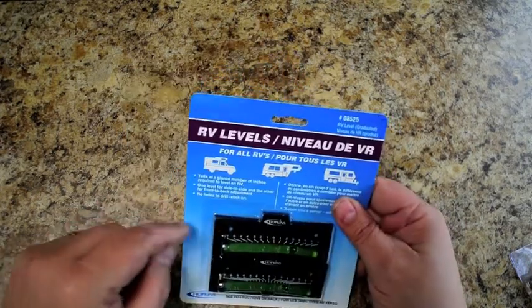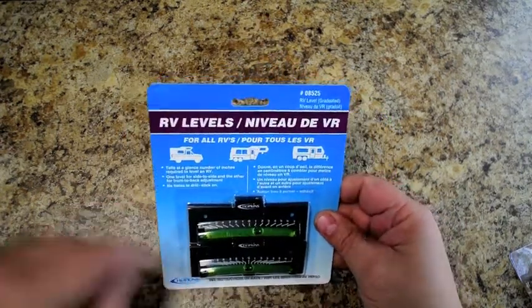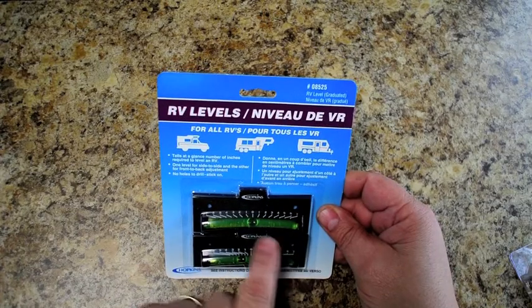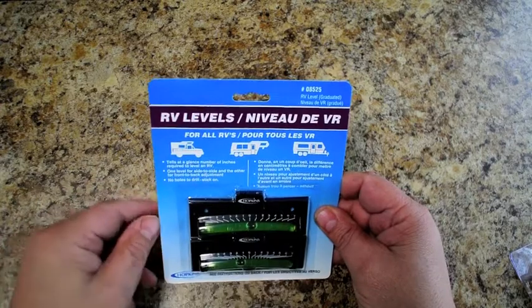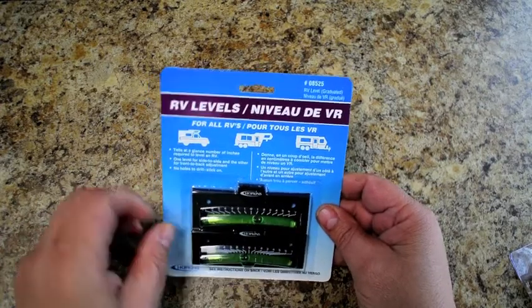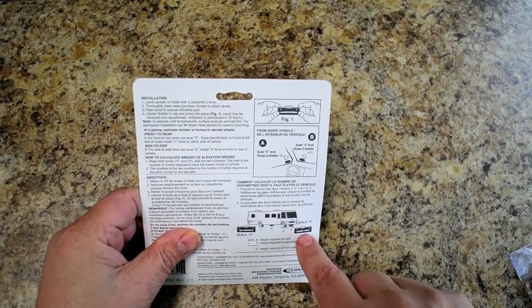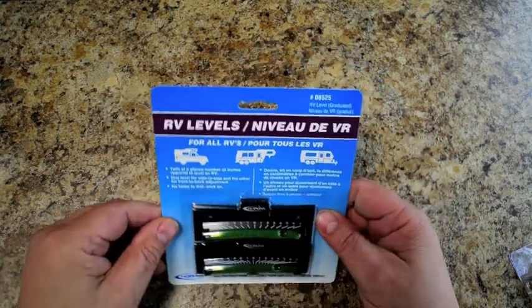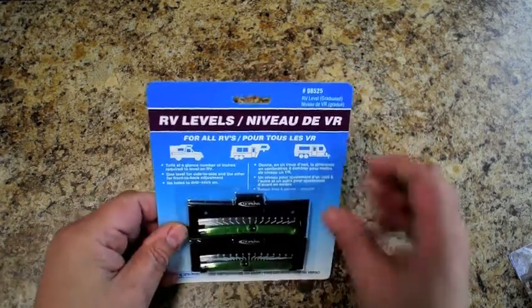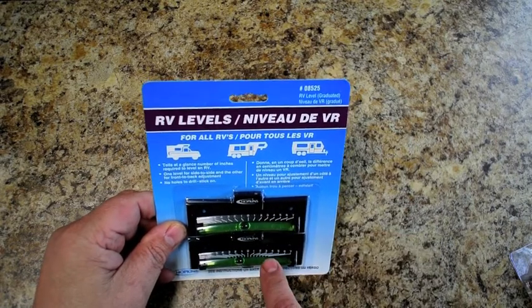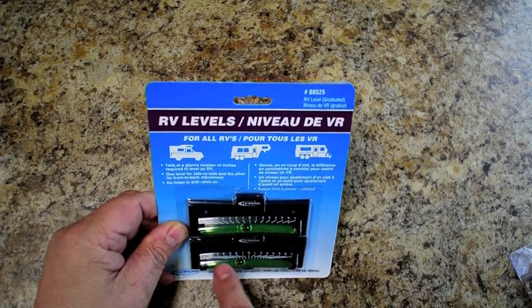The C scale, which is on the bottom, has different graduations than what the 3 scale does on the top. The way this is supposed to work, according to the back, is the 3 scale is supposed to go on either the front or the back of the rig, and the C scale is supposed to go on the side of the rig.